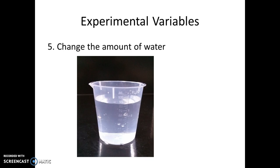Another potential variable is changing the amount of water you dissolve the Alka-Seltzer in. For the control group you use two ounces, but you could try three ounces, six ounces, or even a whole liter of water to see if that makes it dissolve faster. There are other variables beyond this list of five — feel free to brainstorm, and mention other ideas to your instructor to see if we can accommodate a different experiment.